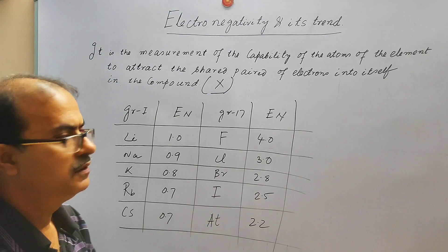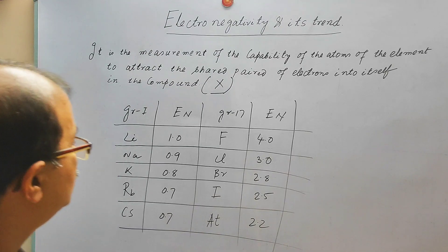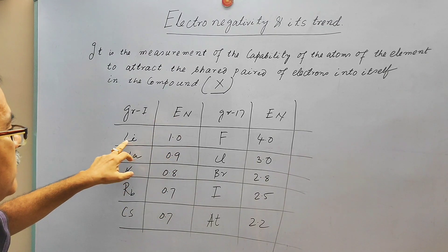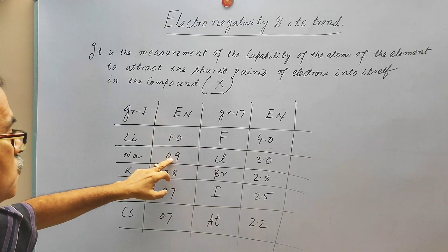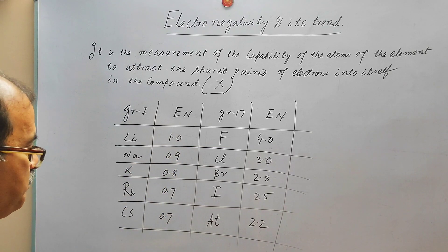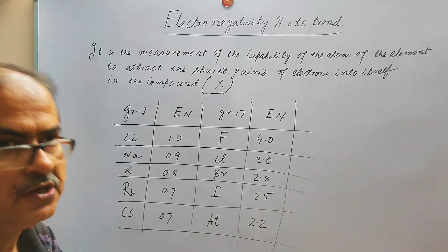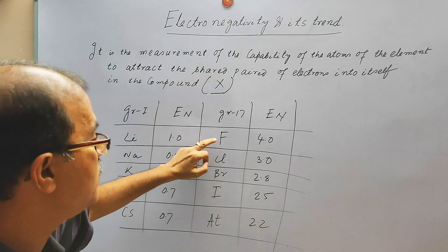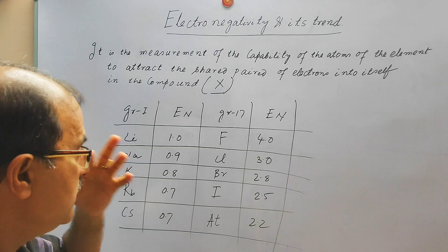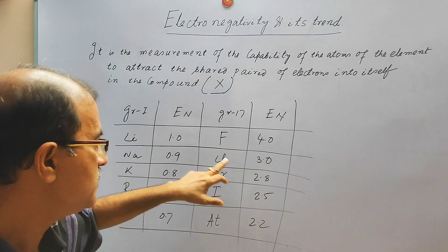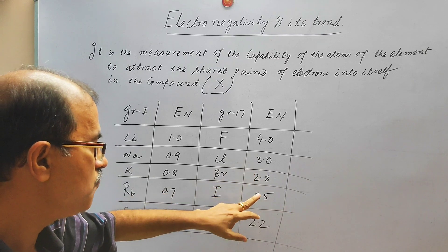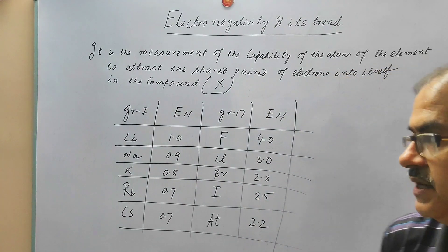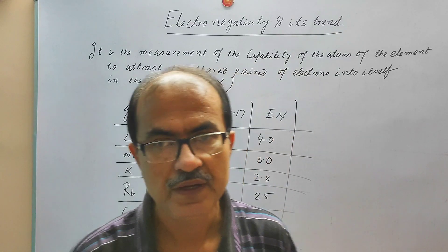To understand the trend down the group: Group 1 elements show lithium having the highest electronegativity, followed by sodium, then potassium, then rubidium, and cesium and francium having the lowest. In Group 17, fluorine is at the top of the list, then chlorine, then bromine at 2.8, then iodine at 2.5, and astatine at 2.2. As we go down the group, electronegativity decreases.